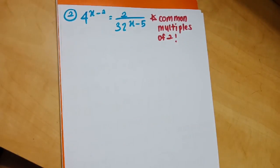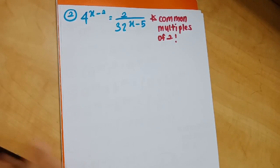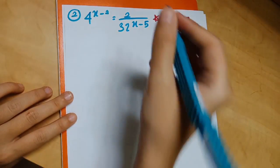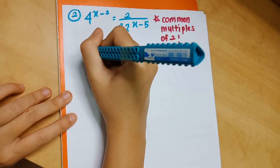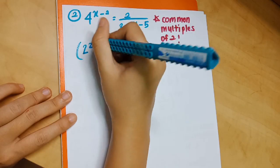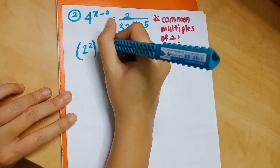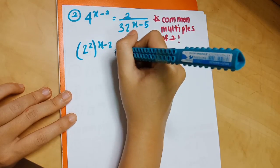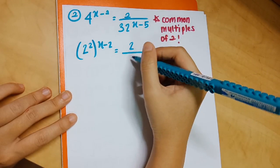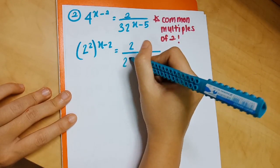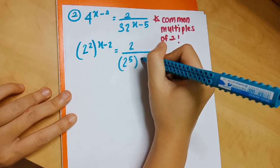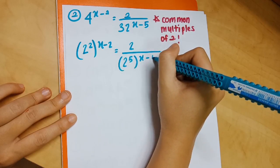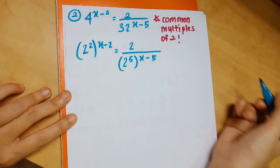Change everything to base 2: 4 equals 2 squared, so write 2 squared bracket (x−2). Also, 32 equals 2 to the power of 5. If you're unsure, you can check by typing powers of 2 into the calculator — 2 to the power of 5 gives 32.